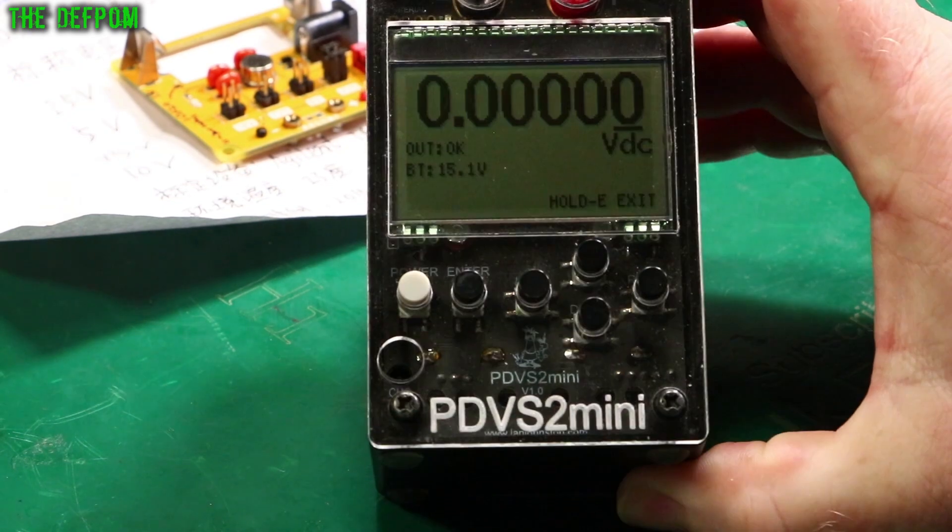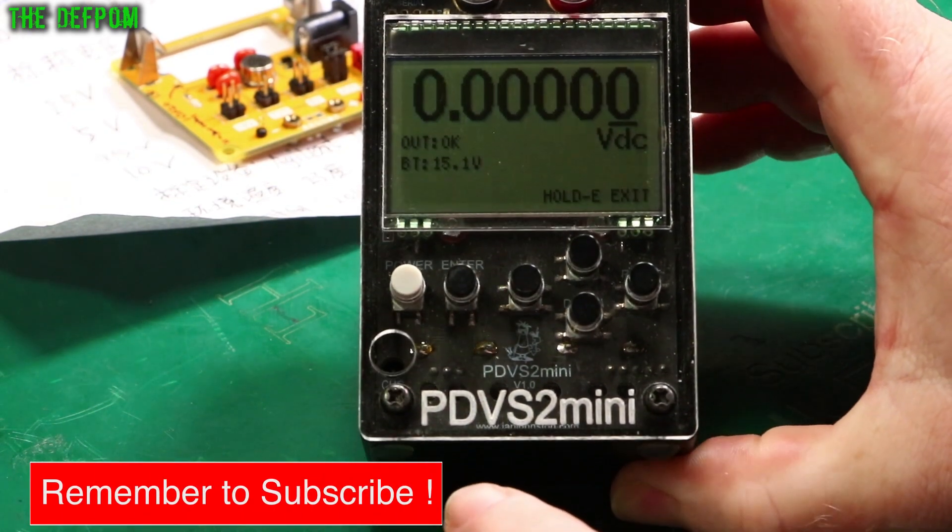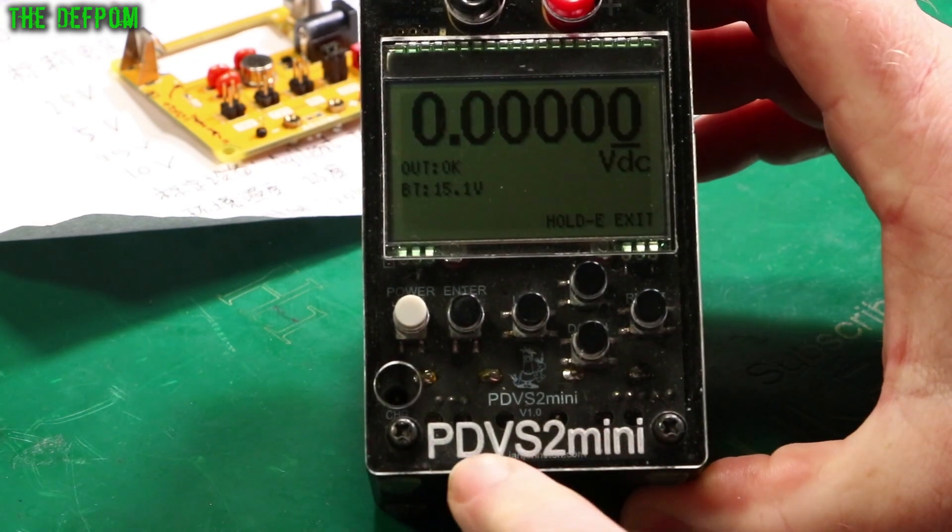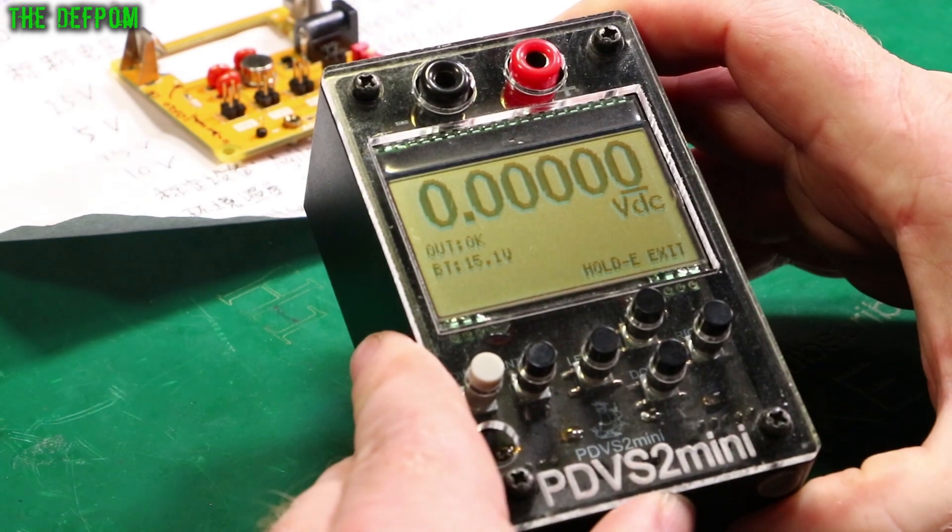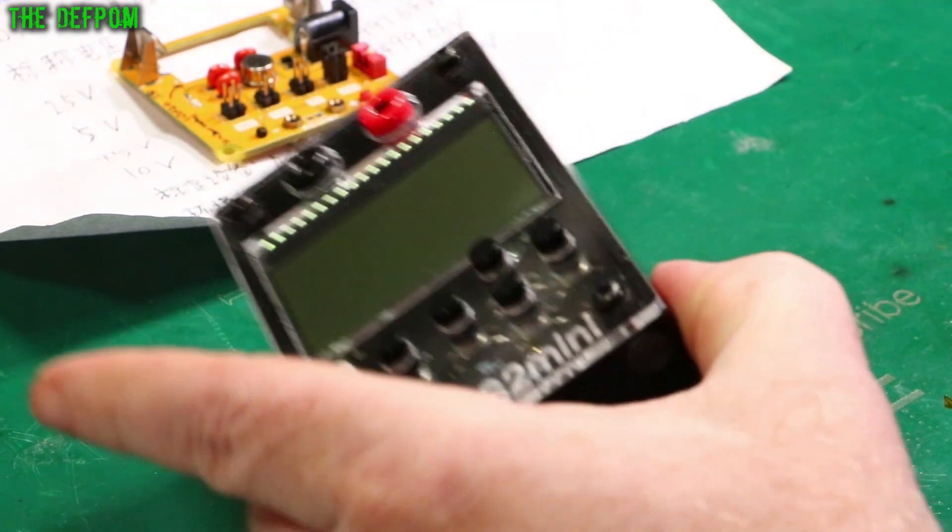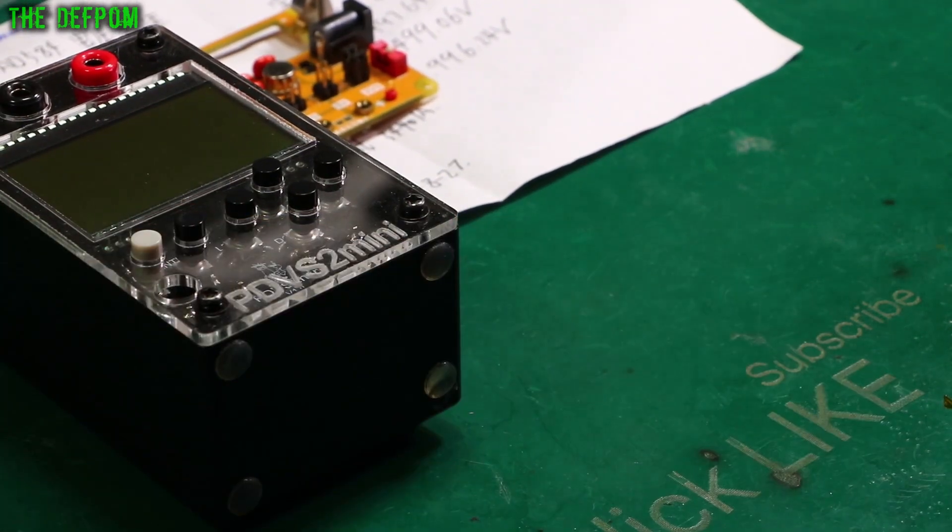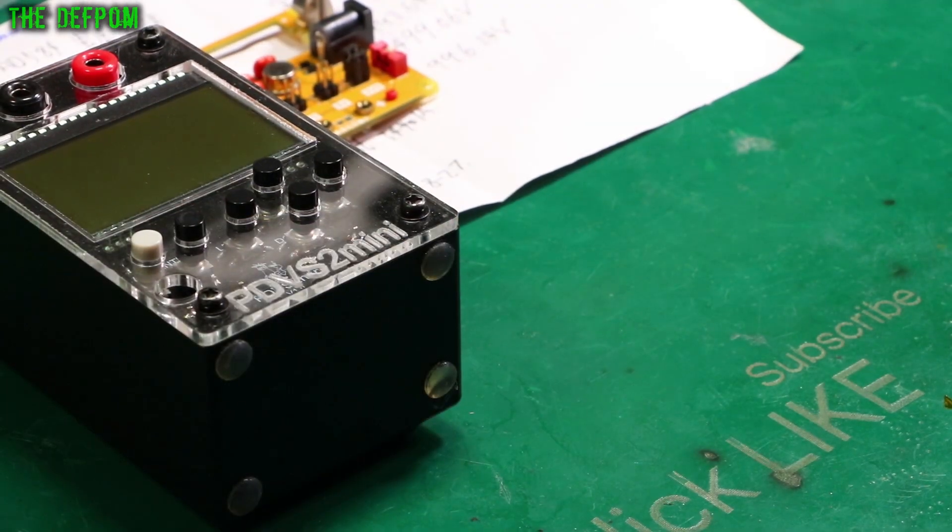This is from Ian Johnston, which you can kind of see his address down the bottom there. You can't really see it, ianjohnston.com, but if you just do a search online for PDVS2 mini, I'm sure it will pop up. And this uses an LM399 voltage reference, which is a very good heated reference, and it's used in a lot of multimeters. Things like the Siglent SDM3065X, which is a six and a half digit multimeter, that uses the LM399, as do a lot of other multimeters. It's a very common device.